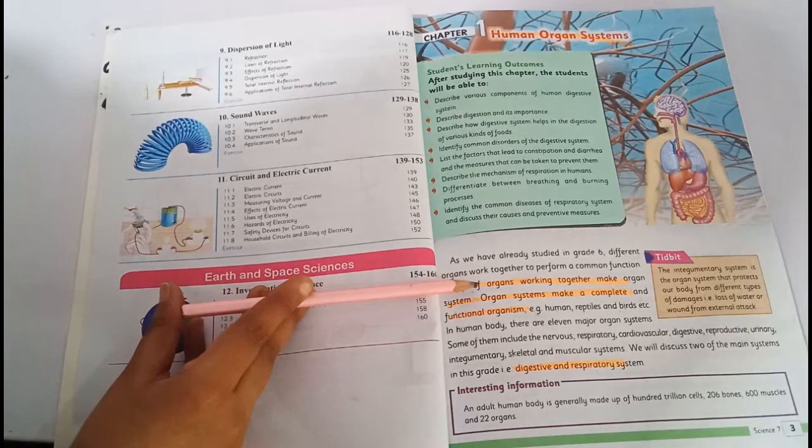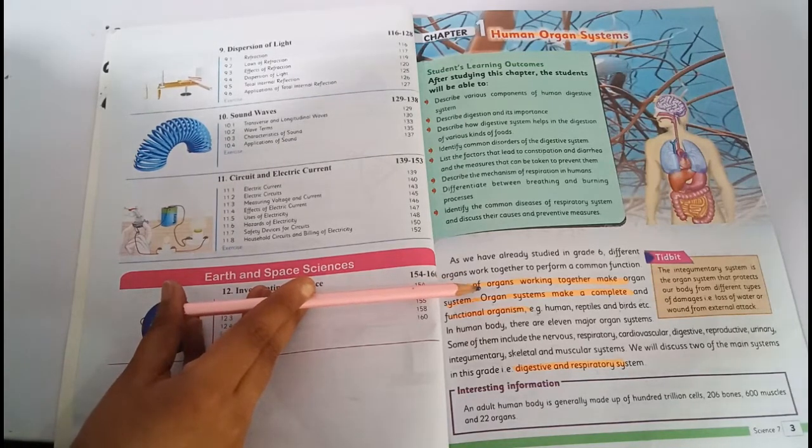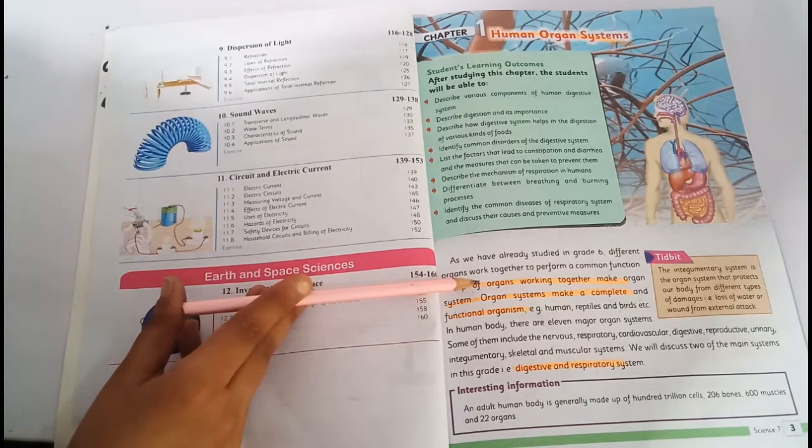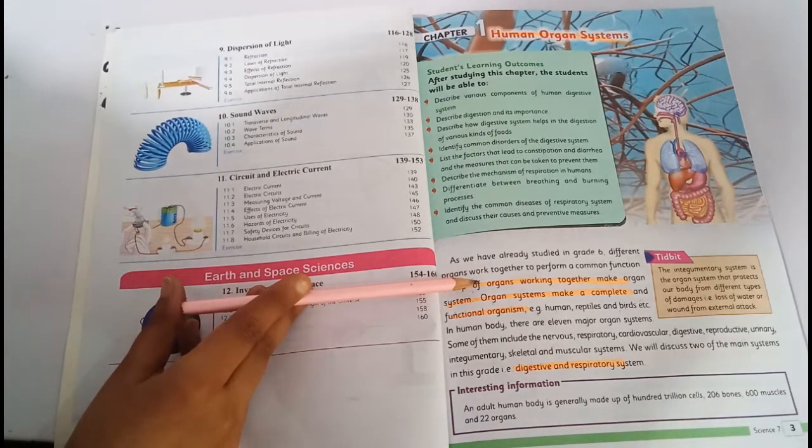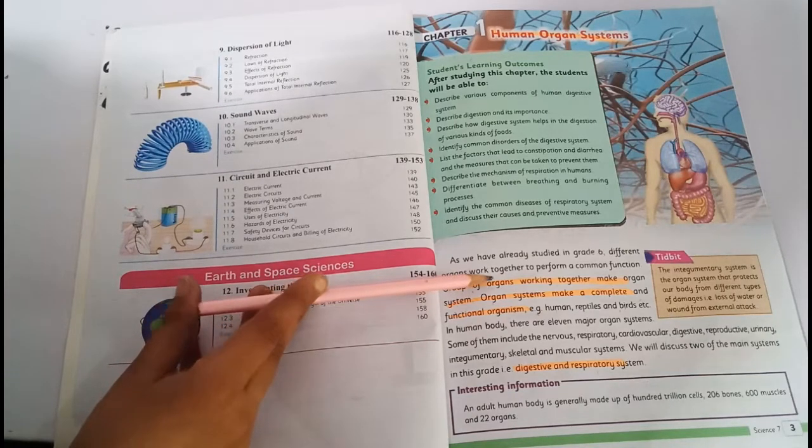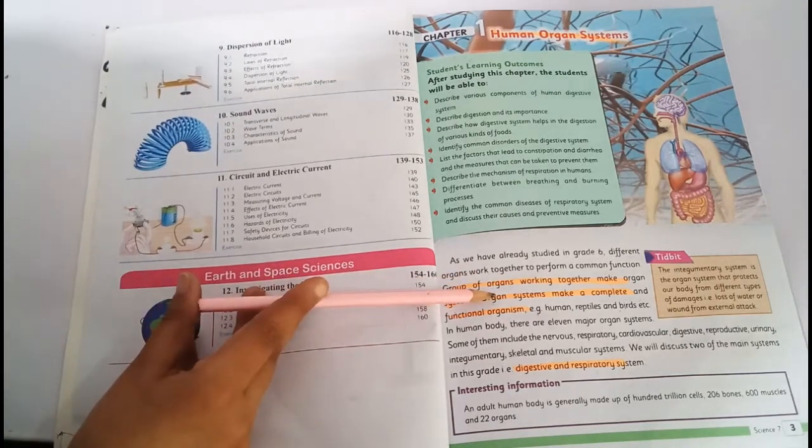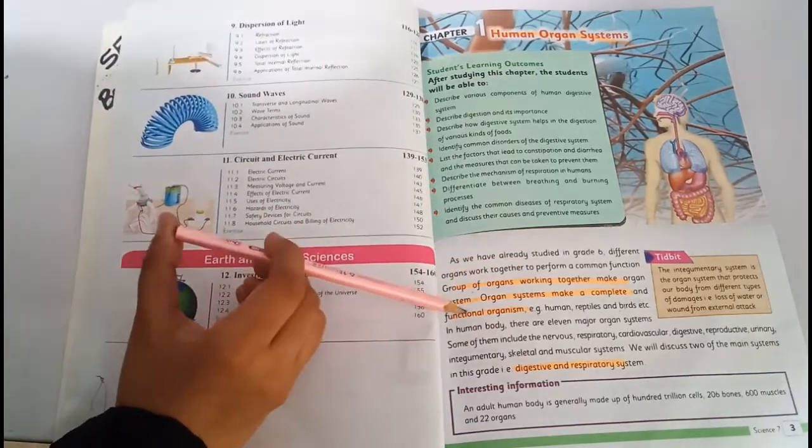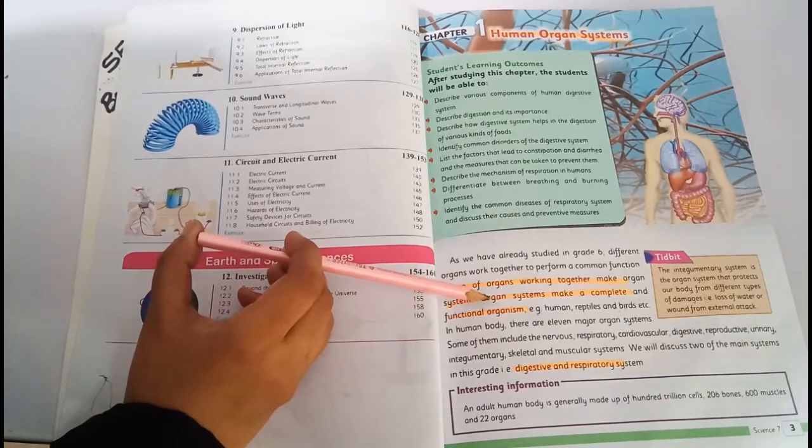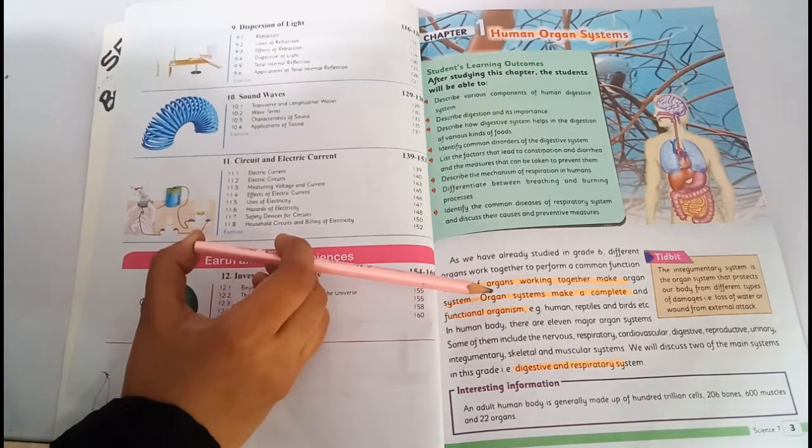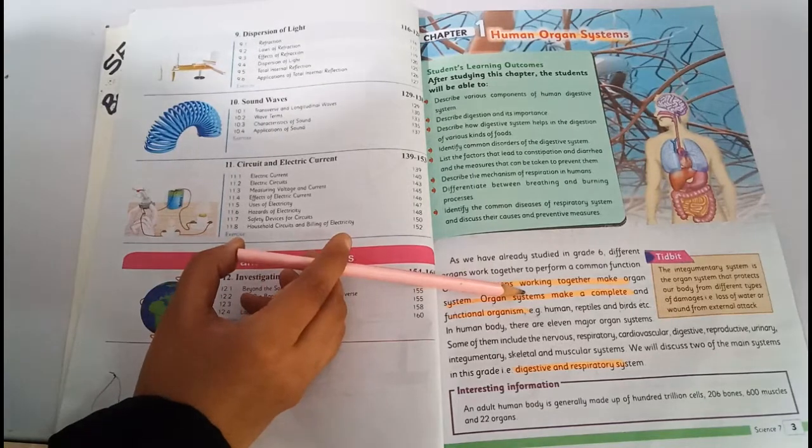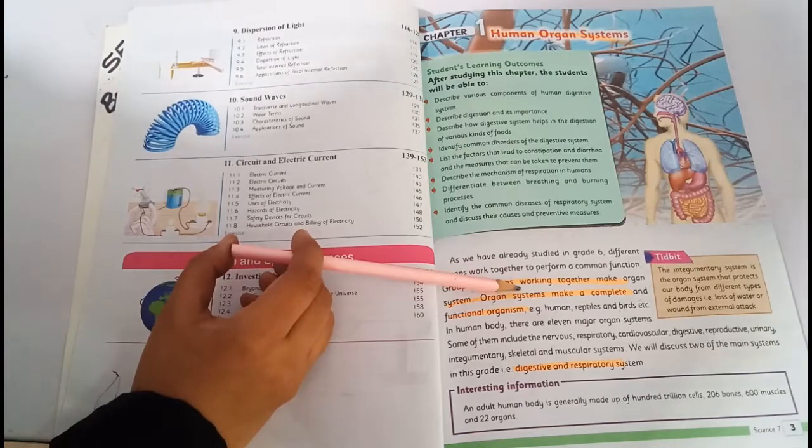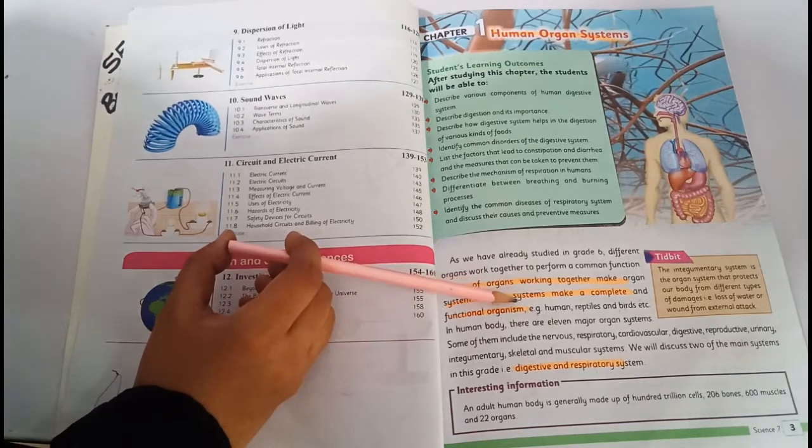The cells are basic structures which form tissues and organs. The organs which work together in the same function form an organ system, which makes a complete and functional organism. This means humans, reptiles and birds - different animals have their own organ systems.